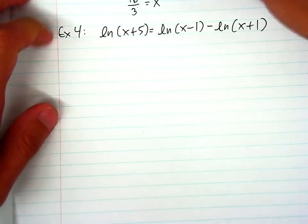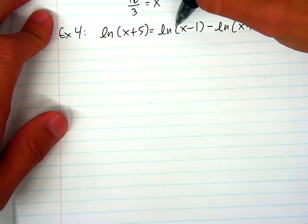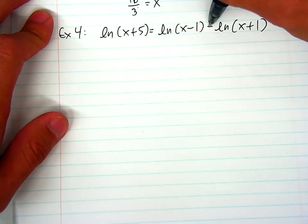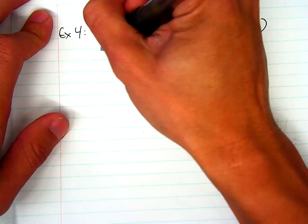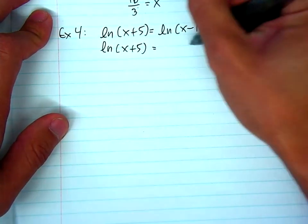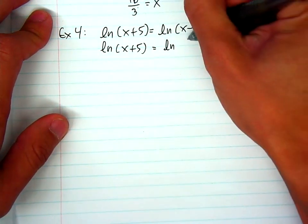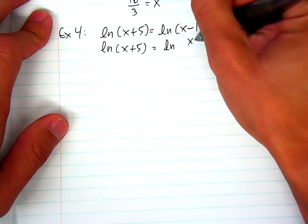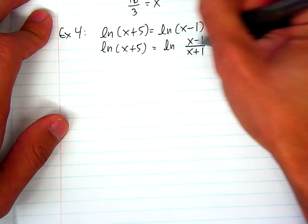Okay, so if I look at this, I actually have to remember my log rules. So if I remember my log rules, I know if I'm subtracting, I'm dividing. So I'm going to rewrite this. I'm going to write natural log of x plus 5 equals the natural log of x minus 1 over x plus 1.